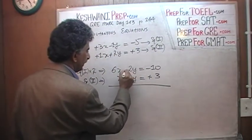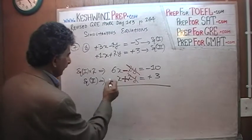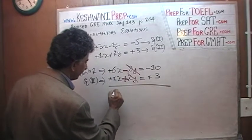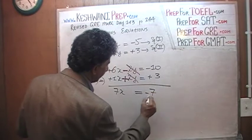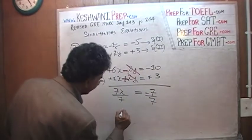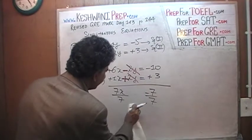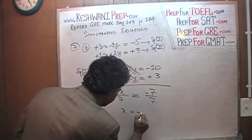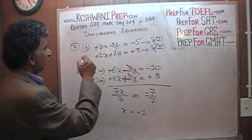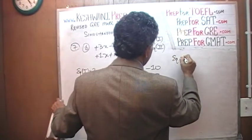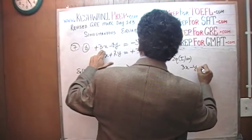We get negative 2y and positive 2y, which cancel each other out. Adding the x terms: positive 6x and positive 1x gives us 7x. And 7x equals negative 10 plus positive 3, which is negative 7. Divide both sides by 7, and we find that x equals negative 1. Let's put this value of x back into equation number 1.